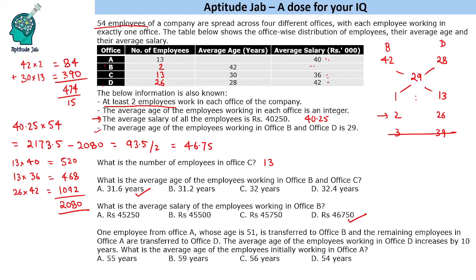Next question: one employee from office A whose age is 51 is transferred to office B, and the remaining employees in office A are transferred to office D. The average age of employees in office D increases by 10 years. What is the average age of employees initially working in office A? After the transfer, office D has an average age of 38 and contains 38 employees.